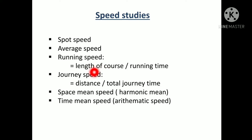Running speed is equal to length of course divided by running time. Journey speed, also known as overall travel speed, is the effective speed between two points. It is the distance between two points divided by the total time taken by the vehicle to complete the journey, including all delays.